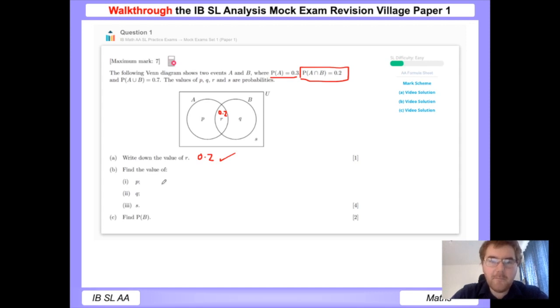So this one here, well, we know the probability of the entire circle, the entire circle here, adds up to 0.3. So 0.2 plus something is 0.3, so this will need to be 0.1, so the whole circle is 0.3.